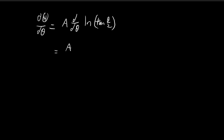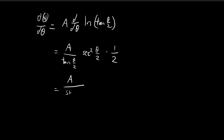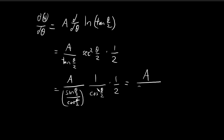We use the chain rule. We treat natural log as a whole function — when we differentiate natural log of something, we put that something in the denominator. Then we differentiate tangent(θ/2), which gives us secant squared(θ/2). We use the chain rule again and multiply by an extra 1/2. We can simplify: tangent(θ/2) is sin(θ/2) divided by cos(θ/2), and secant squared(θ/2) is 1/cos²(θ/2). One of the cosines cancels, leaving us with 1 divided by 2·sin(θ/2)·cos(θ/2).